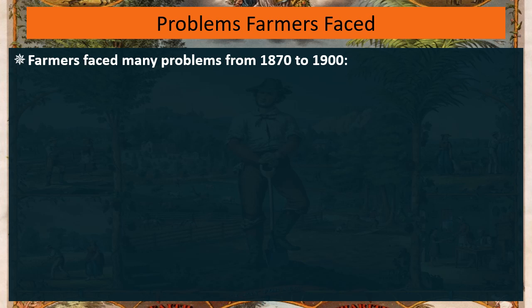So let's look at how this affects farmers specifically. Farmers between 1870 and 1900 faced a lot of problems. Banks foreclosed on them — farmers were in debt at higher rates than industrialists were, and more farmers were losing their farms than factories were closing.